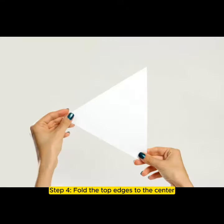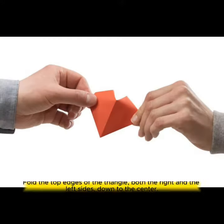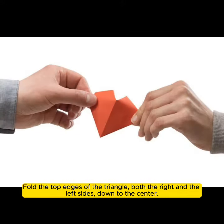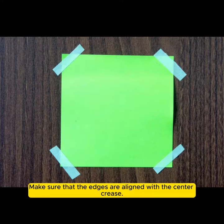Step 4: Fold the top edges to the center. Fold the top edges of the triangle, both the right and the left sides, down to the center. Make sure that the edges are aligned with the center crease.